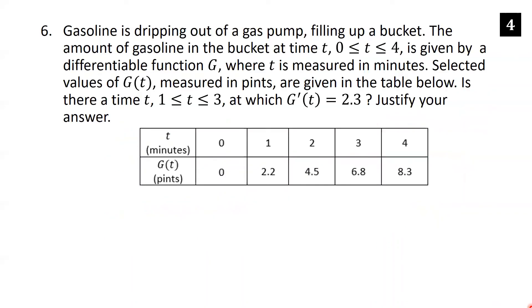Gasoline is dripping out of a gas pump filling up a bucket. The amount of gasoline at time t, for t between 0 and 4, is given by a differentiable function G, where t is in minutes. Selected values of G of t, measured in pints, are given in a table. Is there a time t between 1 and 3 at which G prime of t equals 2.3? Justify your answer.